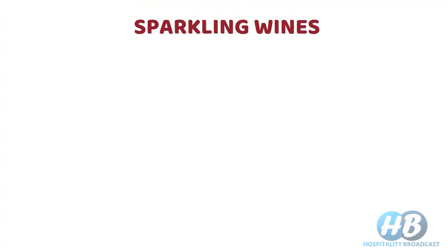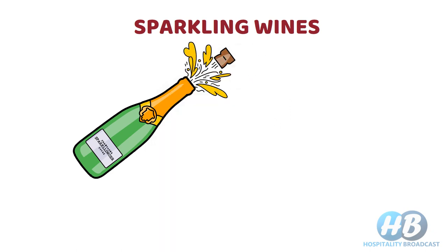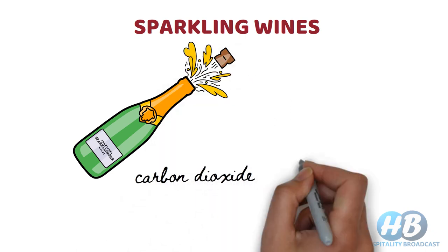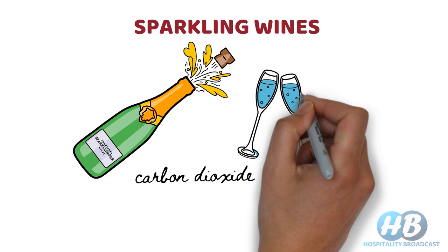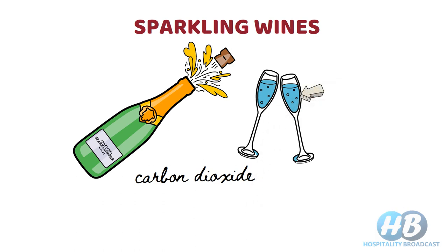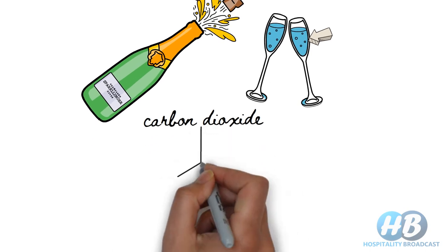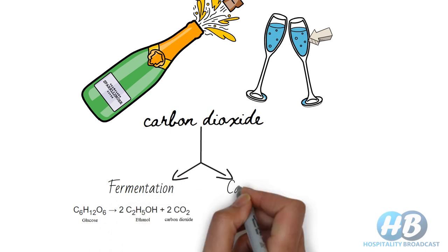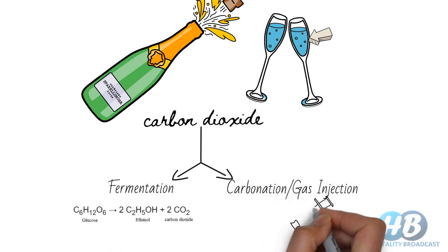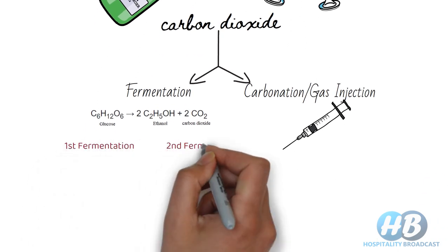Sparkling wines are wines which contain a significant level of carbon dioxide, which produces effervescence. Effervescence, in simple terms, is gas which gets released in the form of bubbles — it also makes our drink fizzy. Carbon dioxide may either be produced naturally with fermentation or be forcibly injected later.